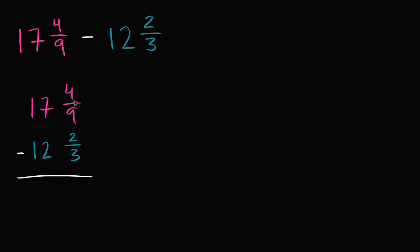The first thing that we might want to do is look at the fraction parts and start subtracting, until we see that we have different denominators here. We have ninths and we have thirds. So the first thing we want to do is get to a common denominator, and a good common denominator would be the least common multiple of 9 and 3.